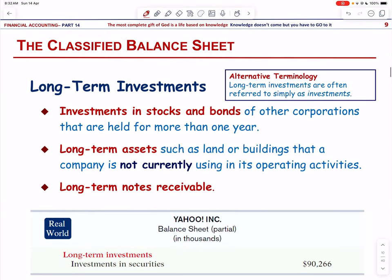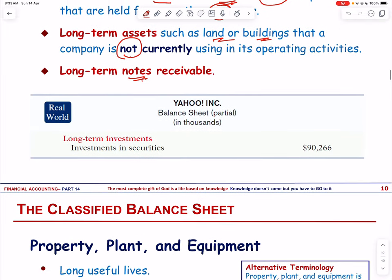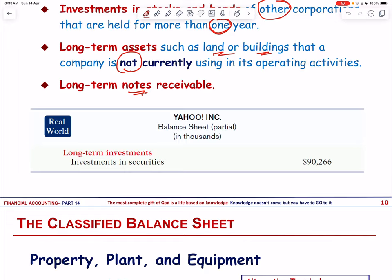Long-term investments — also simply called investments — may be stocks or bonds of other companies held for more than one year. Other long-term assets include land or buildings not currently used in operations and long-term notes receivable, such as loans given to employees for a period of more than one year. These are not current assets; they are long-term investments.